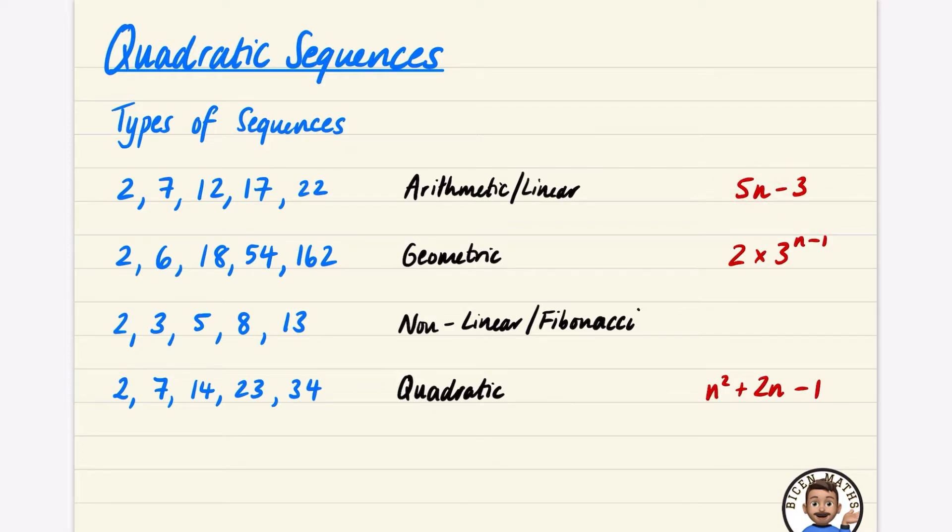This is an example of a geometric sequence because while this one was adding on five each time, this one is not adding on each time, it's actually multiplying each time by three. The nth term of this one you don't need to know how to find, but you can try and see why this one is related to this nth term and power, with the three representing multiplying by three each time.